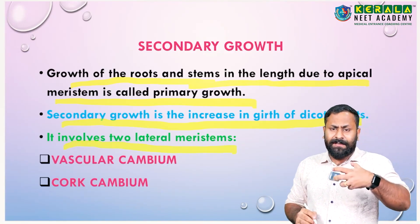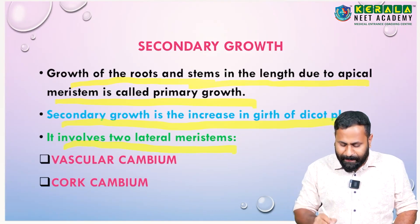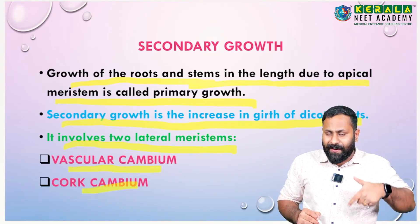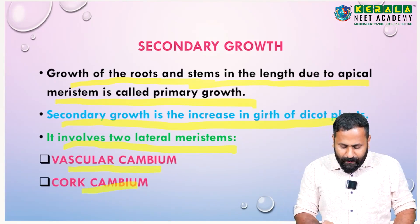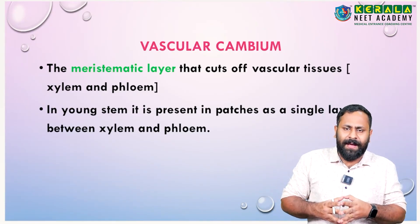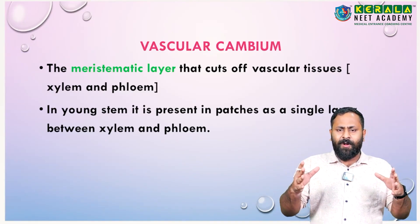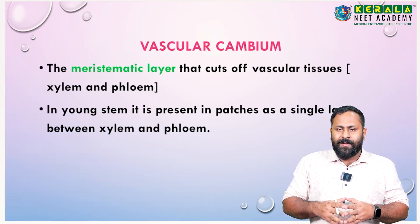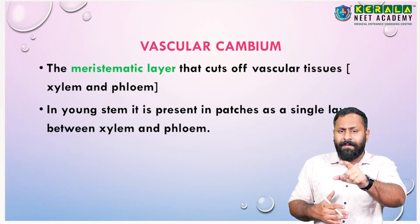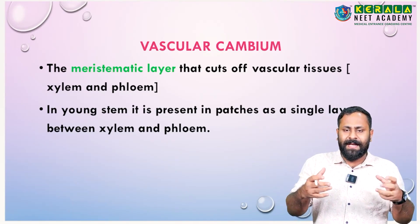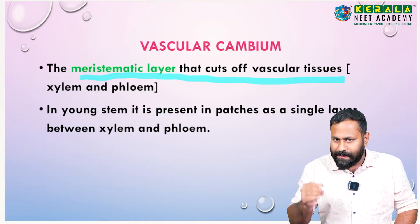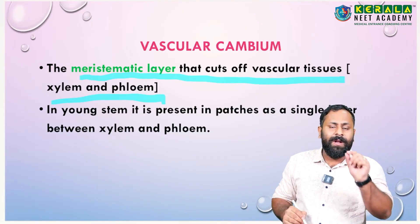Secondary growth is mainly due to two types of lateral meristem: vascular cambium and cork cambium. Together they are called lateral meristem, cylindrical meristem, or secondary meristem. Vascular cambium is the meristematic layer responsible for cutting off or separating vascular tissues such as xylem and phloem.